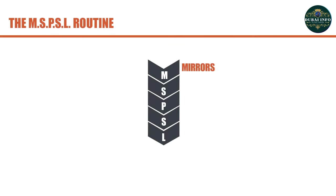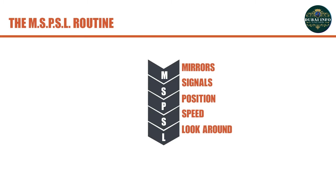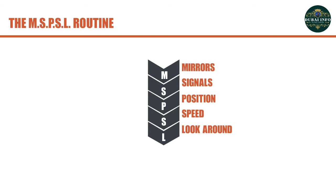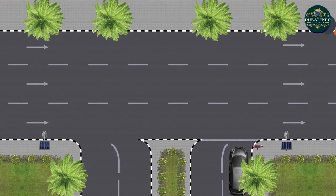Check mirrors, turn on left indicator, position the vehicle in the centre of the lane and reduce the speed, obey the traffic sign, look around for the traffic and other possible hazards. Once the road is clear, motorists may enter in the second lane from the right side.